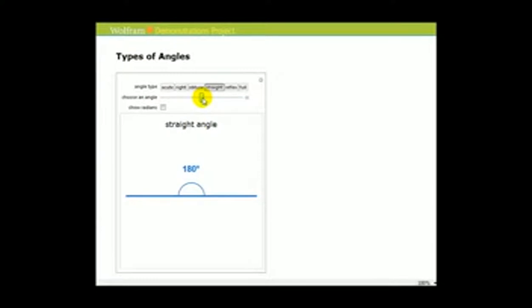Until we reach an angle of exactly 180 degrees, which is a straight angle. Then any angle between 180 degrees and 360 degrees is called a reflex angle. And then once we reach 360 degrees, it's called a full angle.